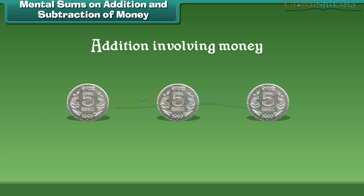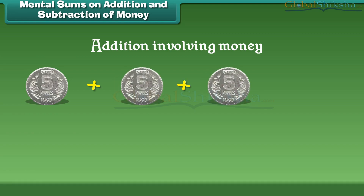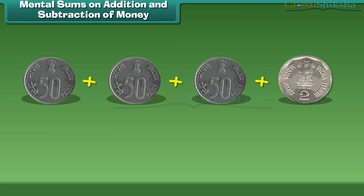Now let us learn about addition involving money. If I have 3 five-rupee coins, then can you tell me the total rupees I have? Add 5 plus 5 plus 5, which is equal to 15 rupees. Now I have 3 fifty-paise coins and a 2 rupee coin, which is equal to 3 rupees 50 paise.